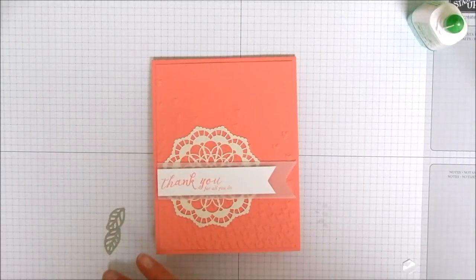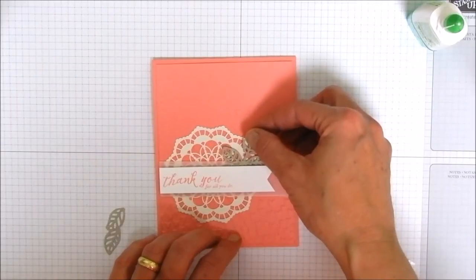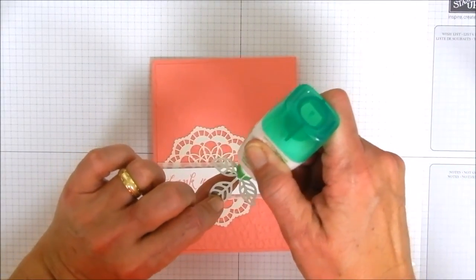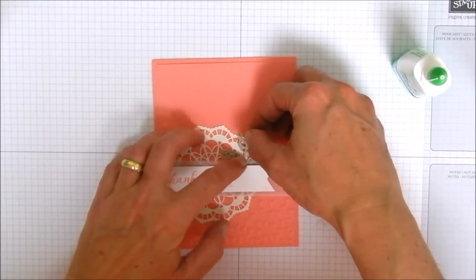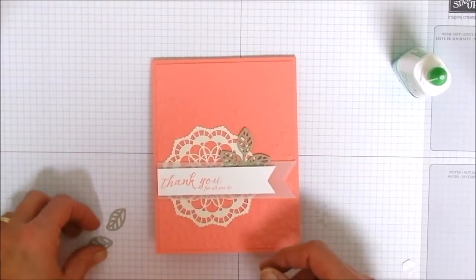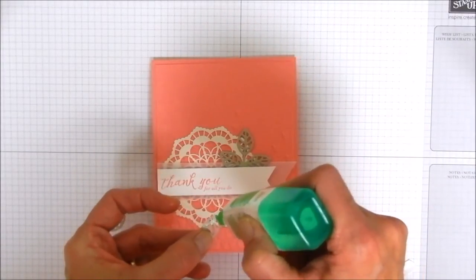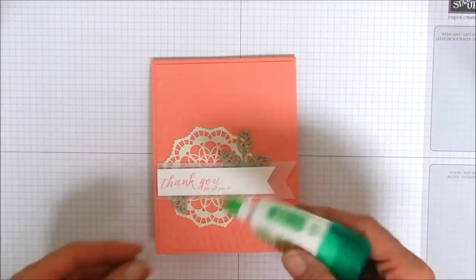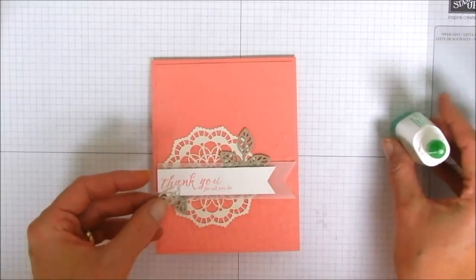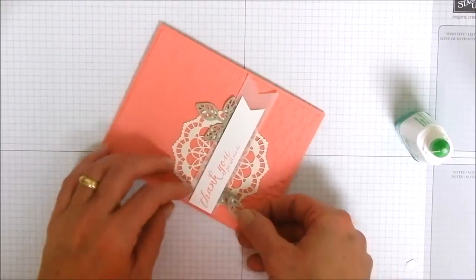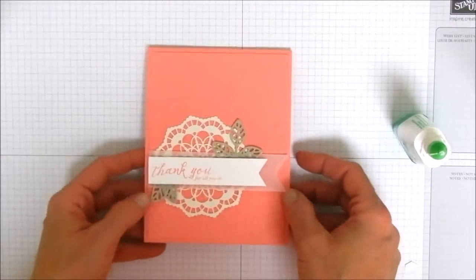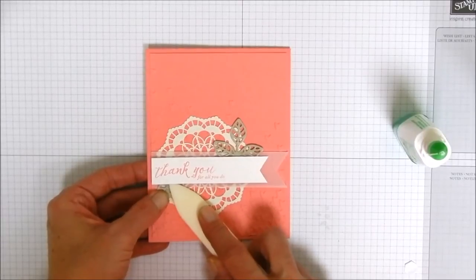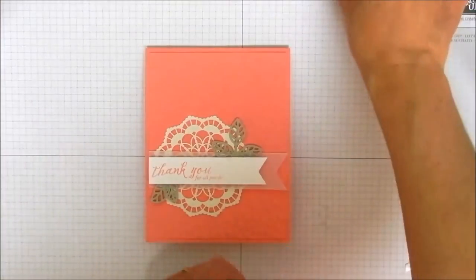Next we're going to bring back in our little leaves and these are going to kind of be tucked between the vellum and the whisper white banner with our sentiment on it. We want to get just a little bit of tombow glue on the back of that and we're going to slip it in where we want it to go and push it down. And then we've got these two little guys that we're also going to slip up under over here on this side and I'm going to kind of overlap them just to kind of one on top of the other. You can just use a bone folder to kind of get under here and smush them down.